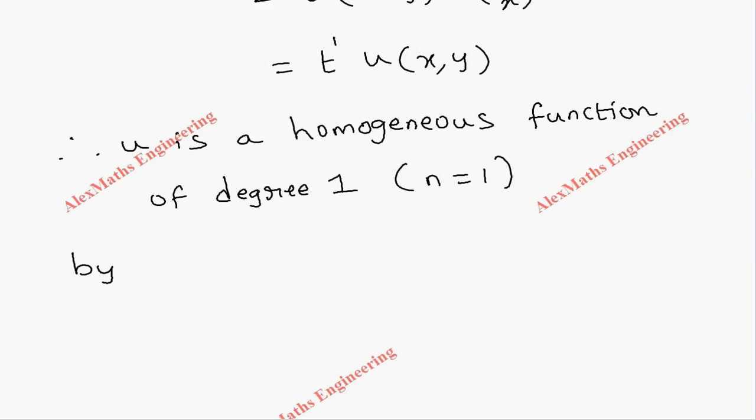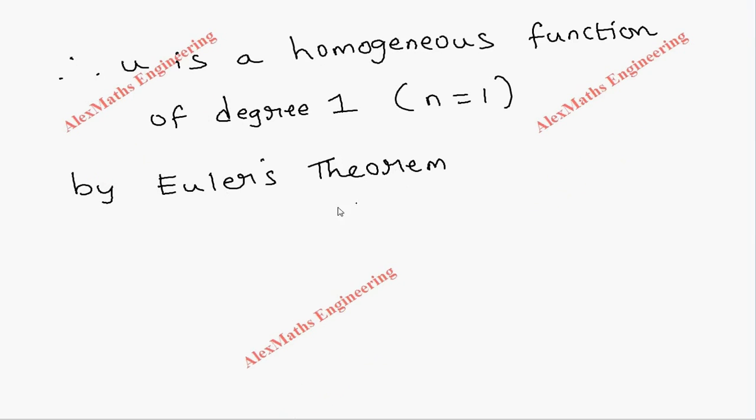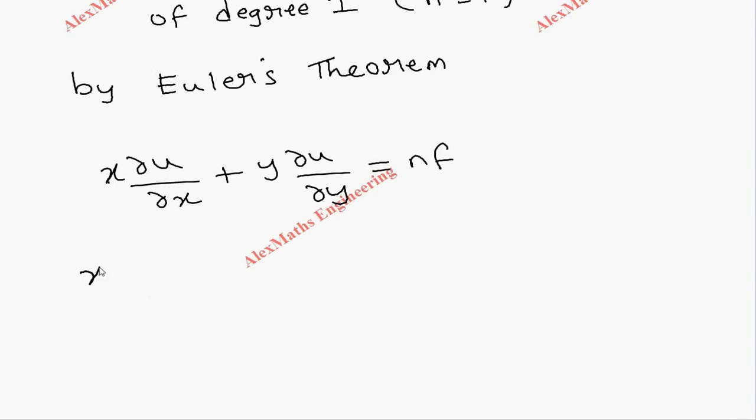This is one statement. And also we have x squared into partial squared u by partial x squared plus 2xy into partial squared u by partial x partial y plus y squared into partial squared u by partial y squared.